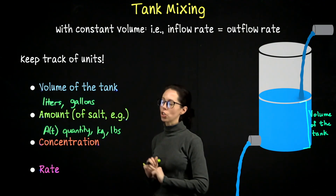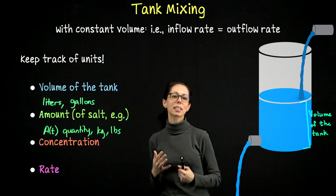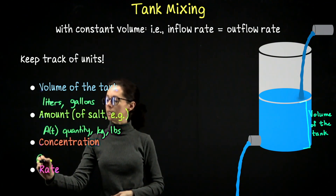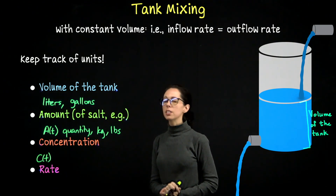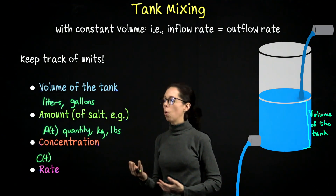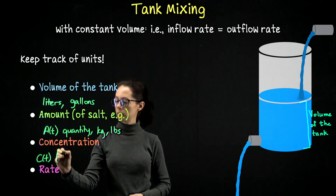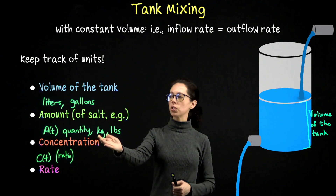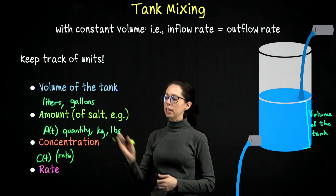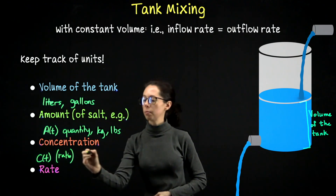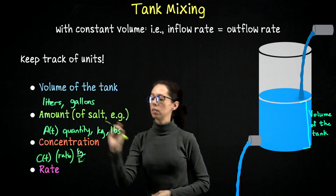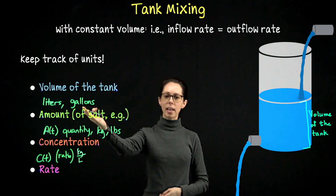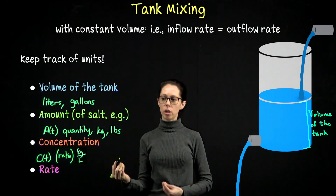The next concept to keep an eye on is the concentration, which I'll call C(t). It's a ratio — part per whole. So if we're looking at kilograms of salt in a 50-liter tank, the concentration unit would be kilograms per liter — that's the saltiness of the tank. If it were pounds of sugar in a 10-gallon tank, the concentration unit would be pounds per gallon.